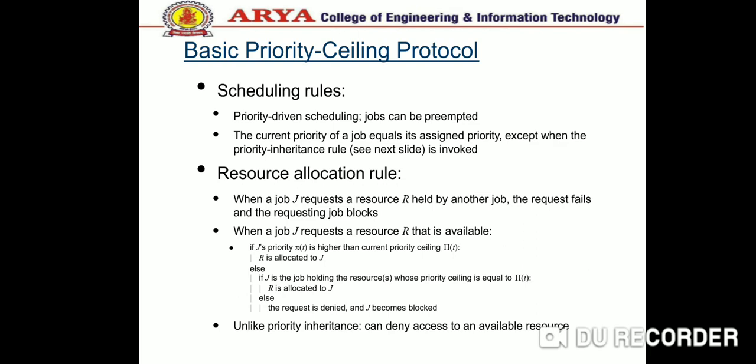Observation 1: T cannot be blocked if at time t every allocated resource has a priority ceiling less than π, meaning π is greater than π(t). No task with priority lower than π holds a resource with priority ceiling greater than π. T will not require any resource allocated at time t with a priority ceiling less than π and will not be directly blocked waiting for them. No lower priority task can inherit a priority higher than π through resources allocated at time t.